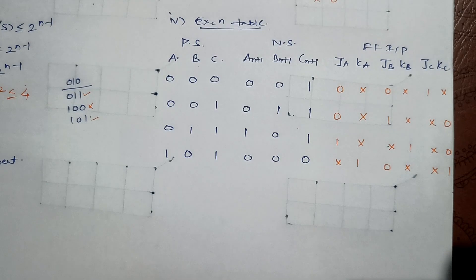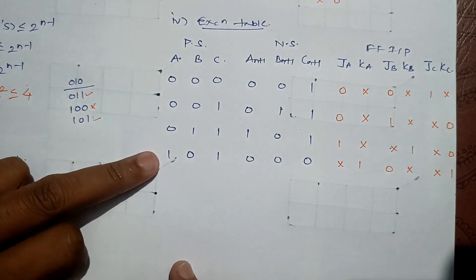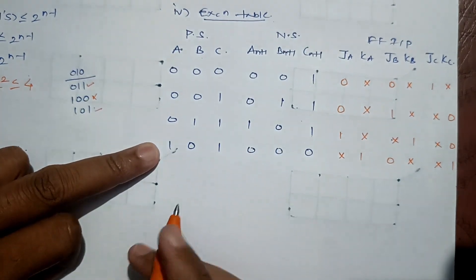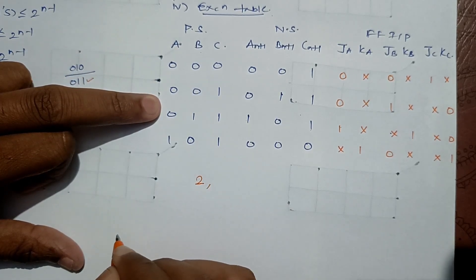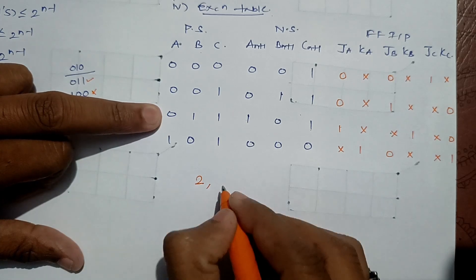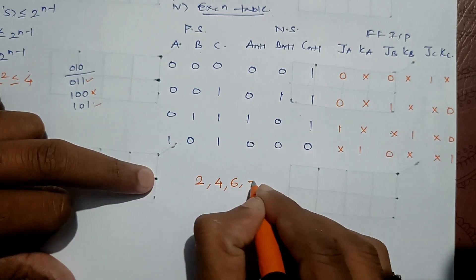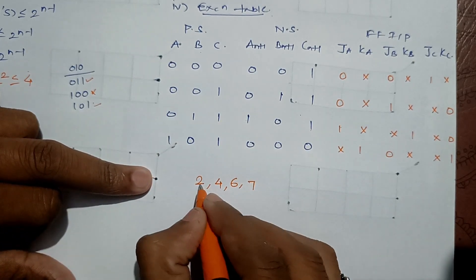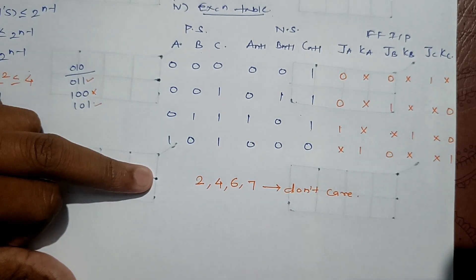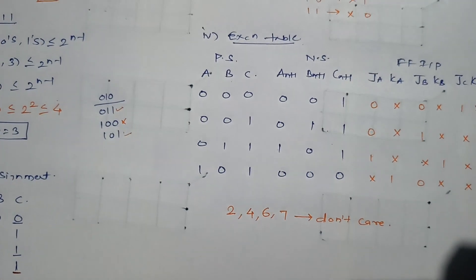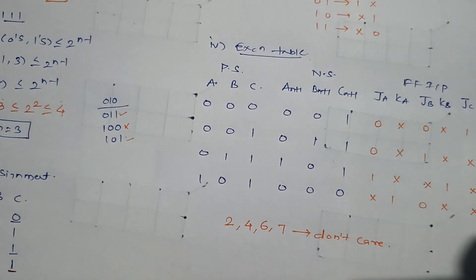In general, three variables require eight combinations, but here we only use four states: 0, 1, 3, and 5. The remaining states — 2, 4, 6, and 7 — are treated as don't care conditions because we are not sure about their combinations.